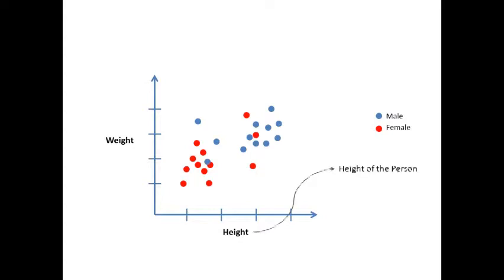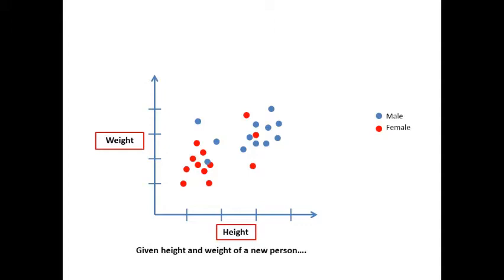Second problem. This is a plot of height of a person and weight of a person, and we have classified them as male and female. These are training examples. Given height and weight of a new person, we want to know his or her gender.